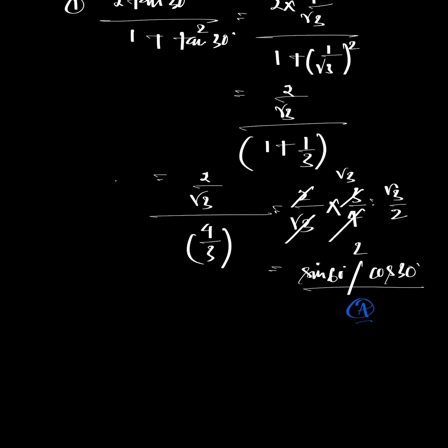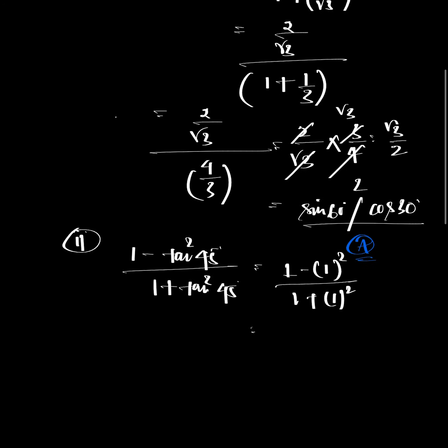Next problem: 1 minus tan² 45° divided by 1 plus tan² 45°. Since tan 45° equals 1, this becomes 1 minus 1 divided by 1 plus 1, which equals 0 by 2, equal to 0.